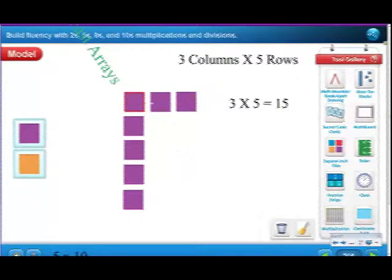And we want to be super fast. 1, 2, 3 columns times 1, 2, 3, 4, 5 rows. 3 times 5 equals 15.